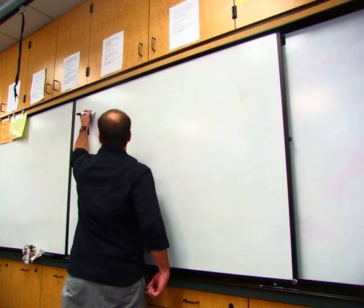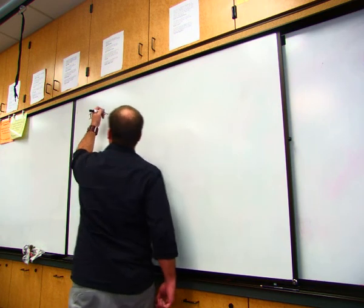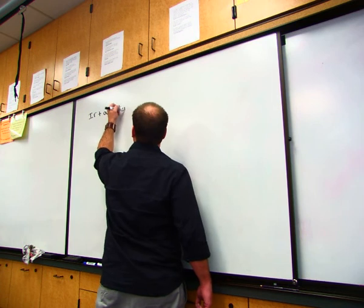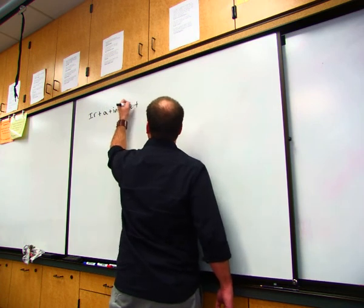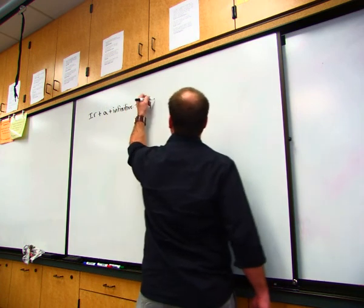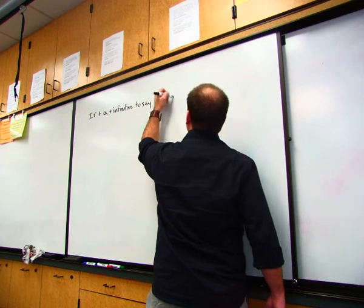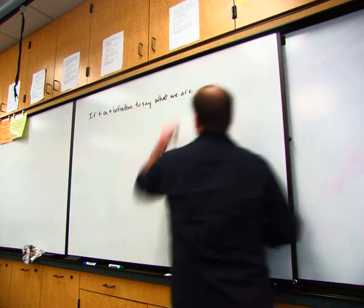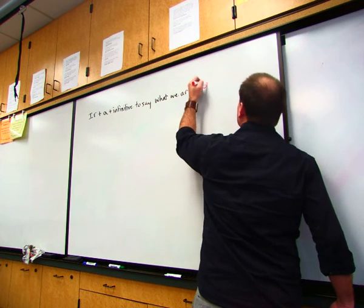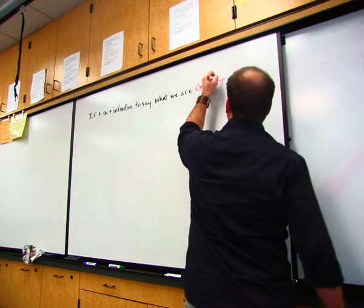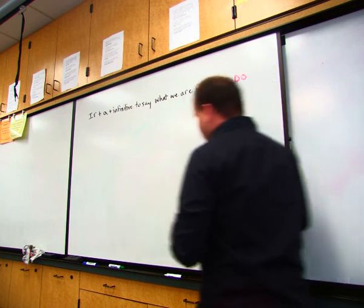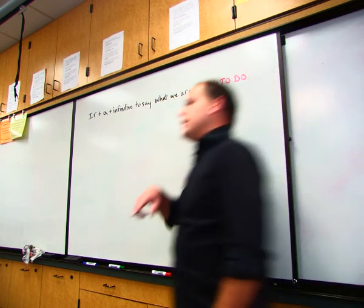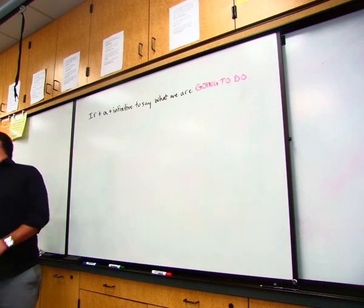Today, we're going to learn about using ir plus a plus an infinitive to say what we are going to do. We're not going to be talking about where we're going, like we did last time. It's what we're going to do.